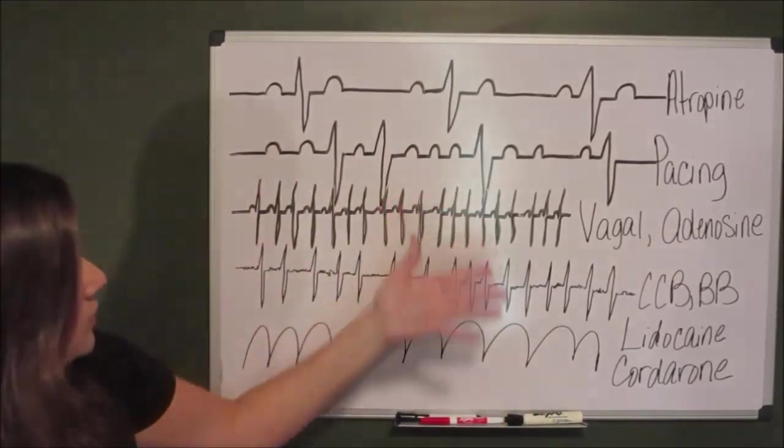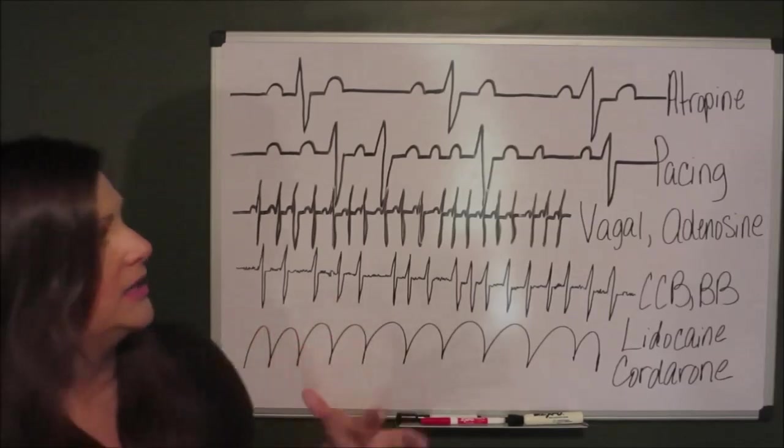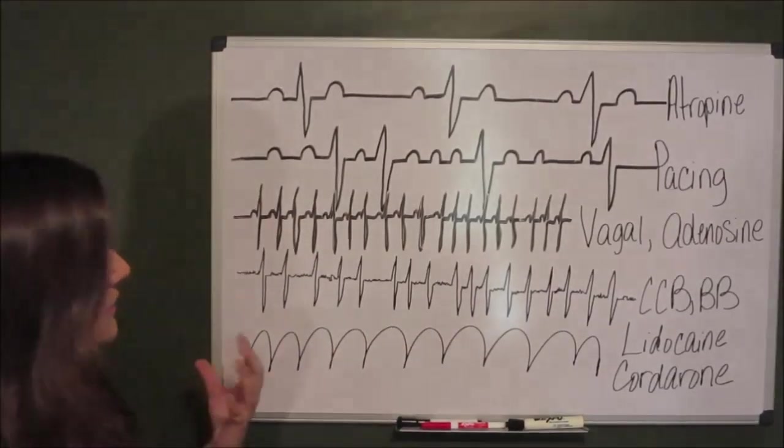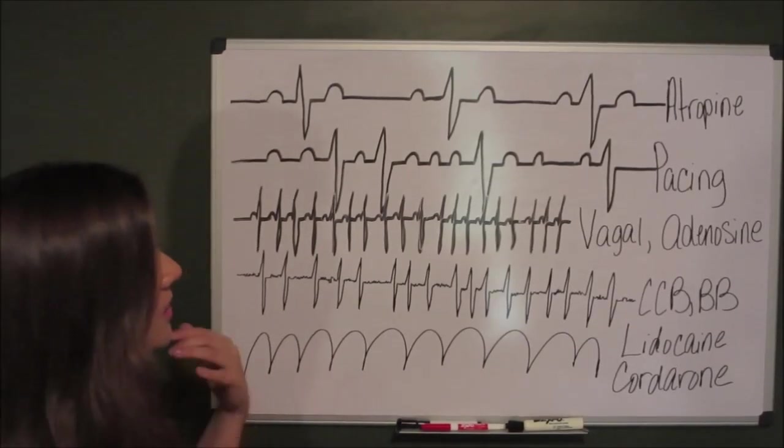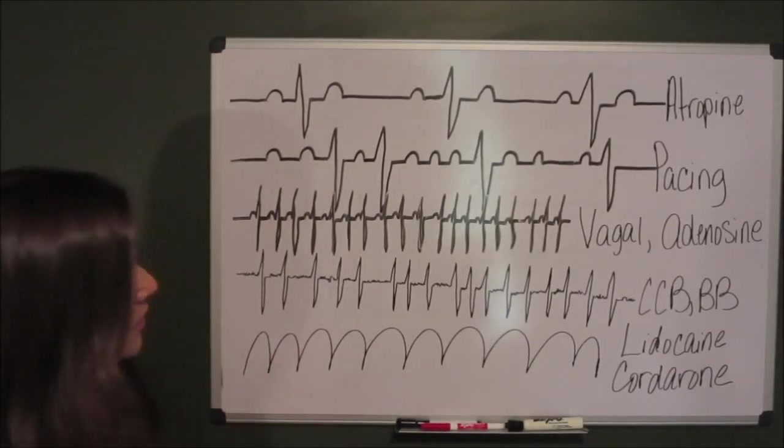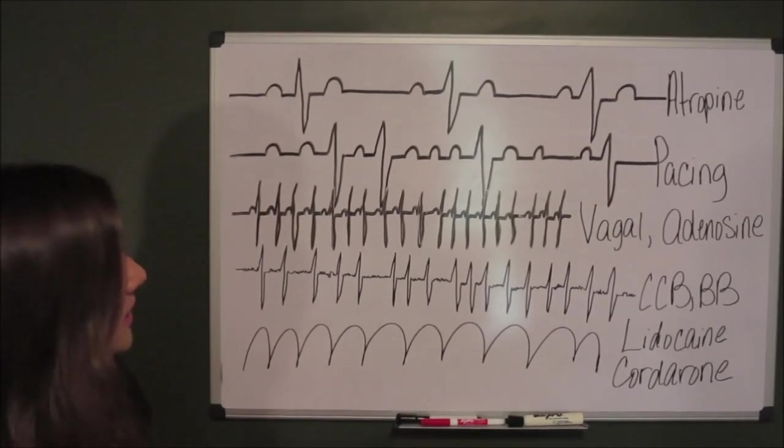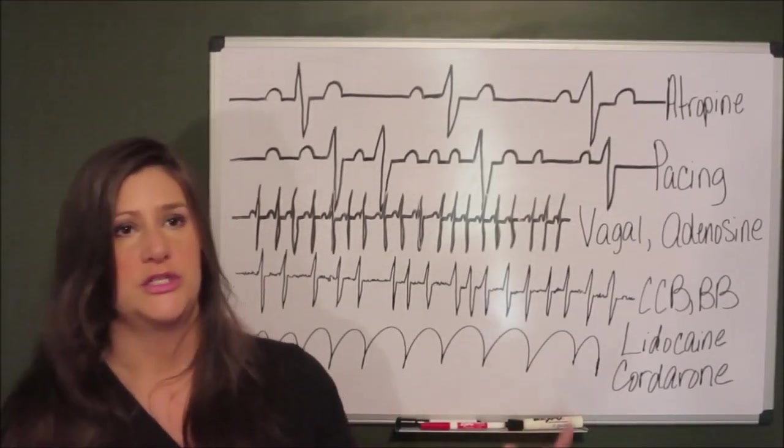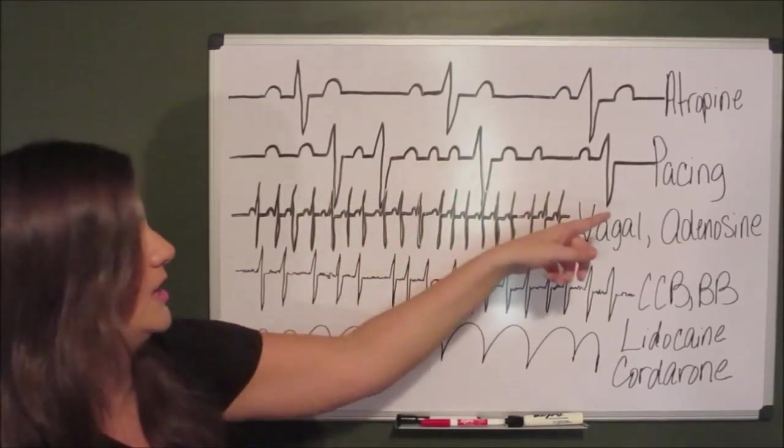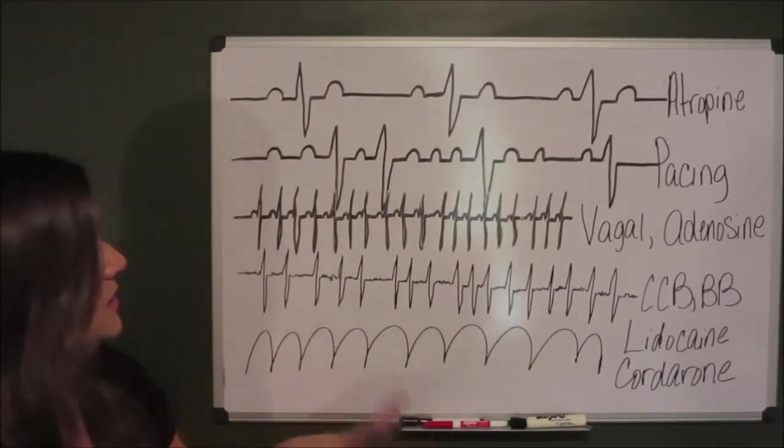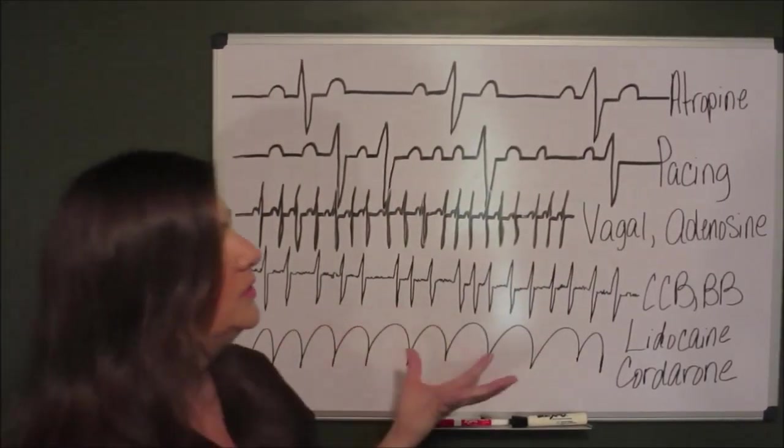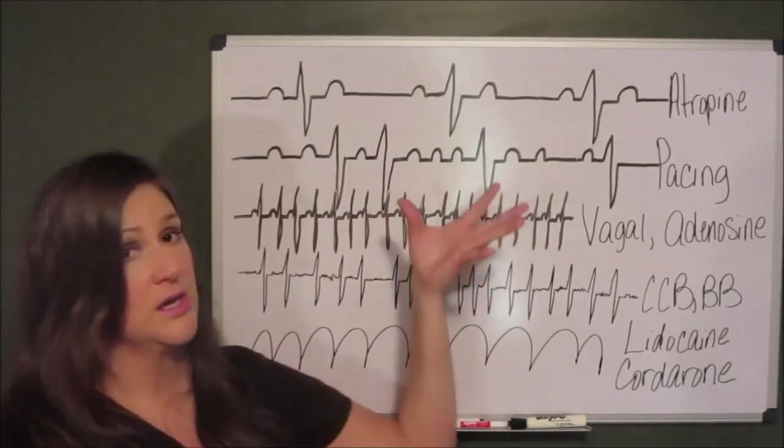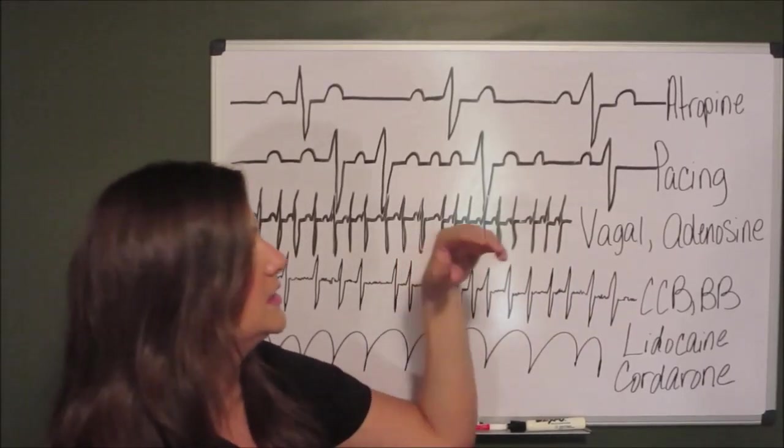So that is our 3rd degree. Your 3rd degree is typically very slow. So when you are trying to figure out if it is 3rd degree or not, first you want to look at the rate. If it is really slow, then look and see if your P waves and QRSs have any kind of relationship. In this case they do not. You have P waves everywhere. So the only way to fix a dysrhythmia that has gone this wrong is through pacing.